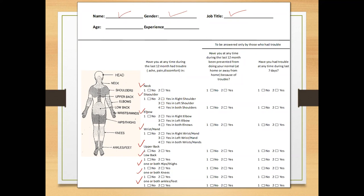Regarding the elbow, if the answer is yes there are three possibilities: yes in the right elbow, the left elbow, or in both elbows. The same applies for wrist and hand, and for upper back and lower back. For thighs and hips, knees, and ankles and feet, the answer is either no or yes.